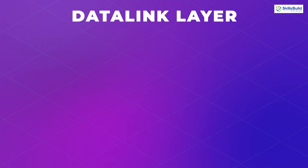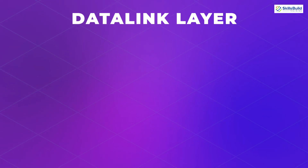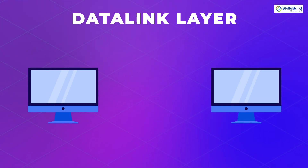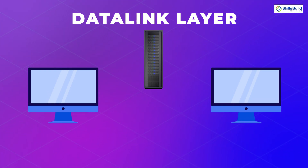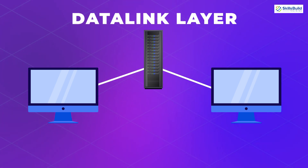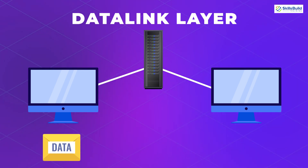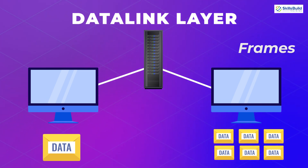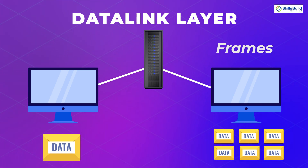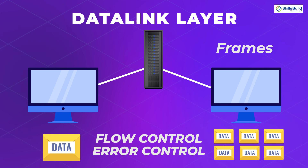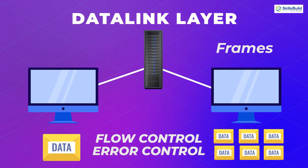The second-to-last layer is the data link layer. Its working is almost similar to the network layer, except that the data link layer transfers data between two devices on the same network. The data link layer takes packets from the network layer and further divides them into smaller parts called frames. Like the network layer, the data link layer is also responsible for flow and error control, but only in intra-network communication — meaning both devices are on the same network.